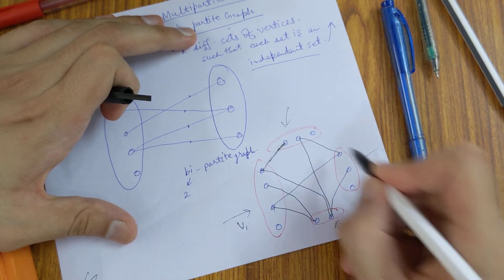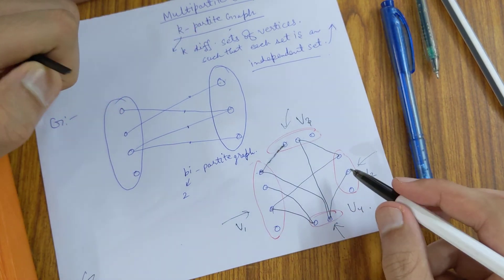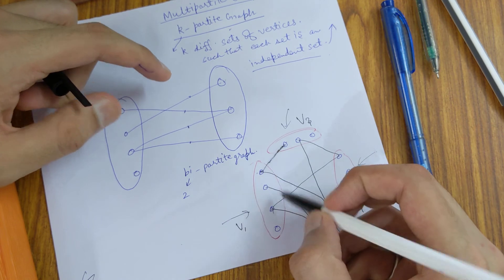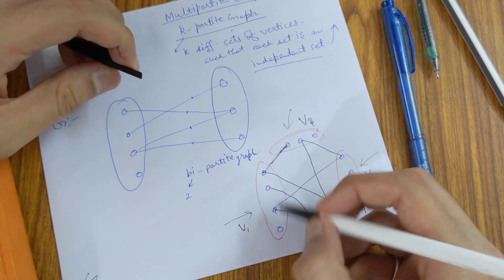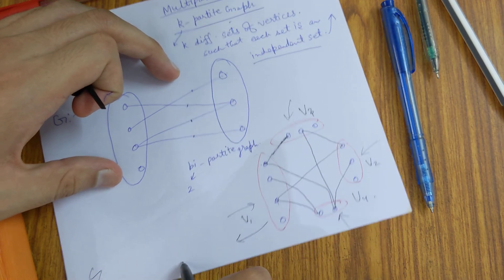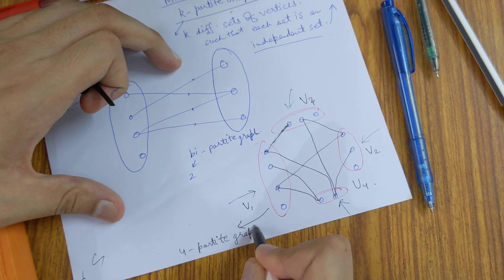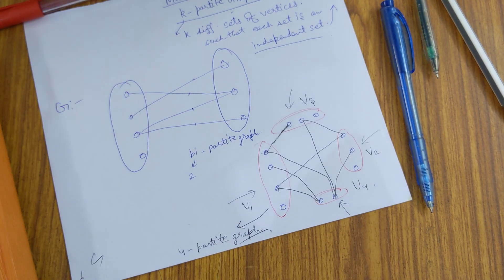Let's call these sets v1, v2, v3, and v4. All of them are independent sets because they are having no edge in between themselves, they are none of them adjacent. This is a multipartite graph, specifically a four-partite graph, because we have four independent sets here. Hope you understood the concept. Thank you friends.